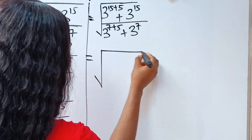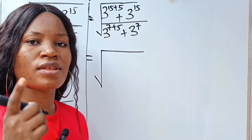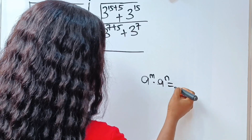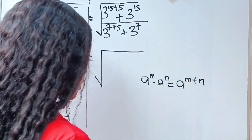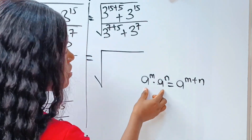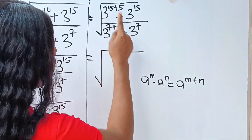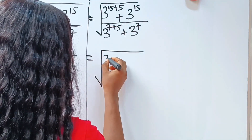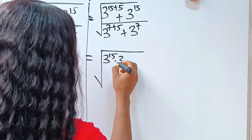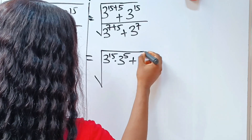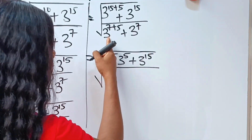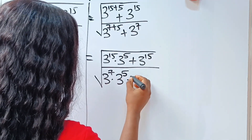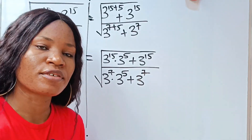Now this is equal to the square root of — there is a law of exponents that states that a to the power of m multiplied by a to the power of n is equal to a to the power of m plus n. So we can write this as 3 to the power of 15 multiplied by 3 to the power of 5, plus 3 to the power of 15, divided by 3 to the power of 7 multiplied by 3 to the power of 5, plus 3 to the power of 7.